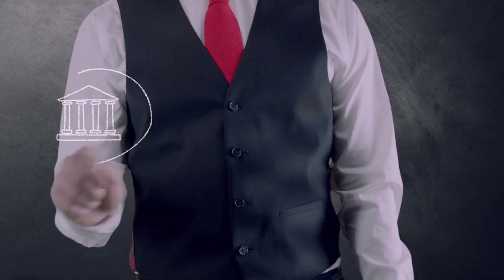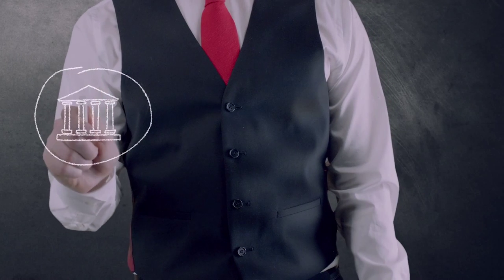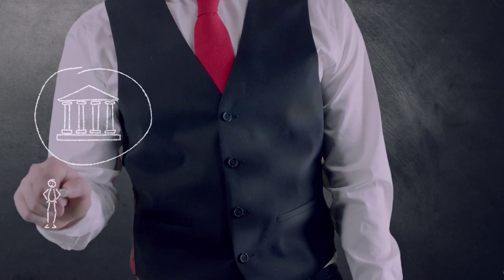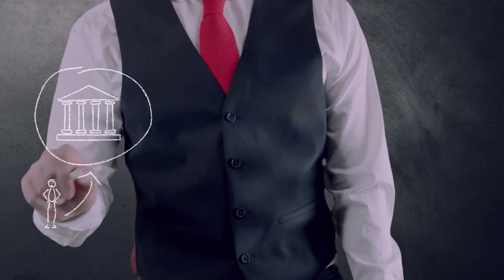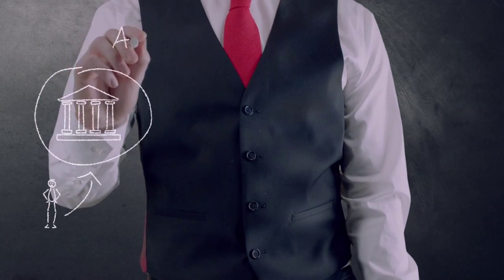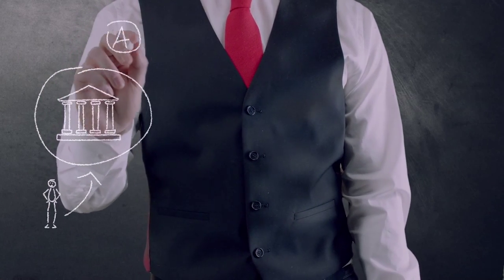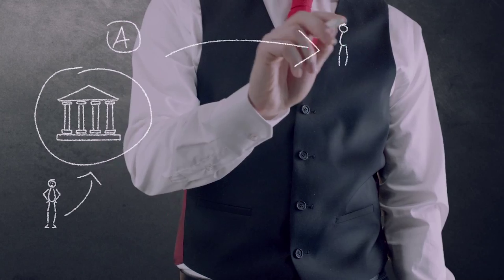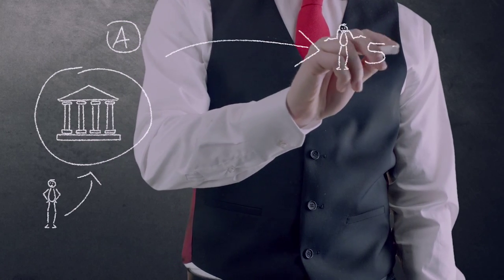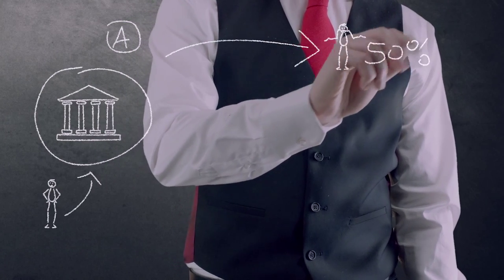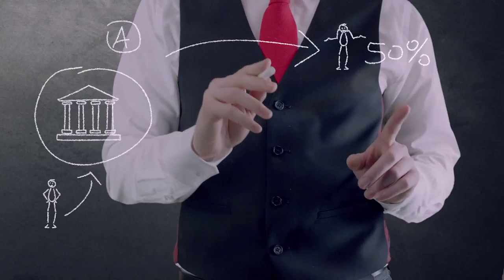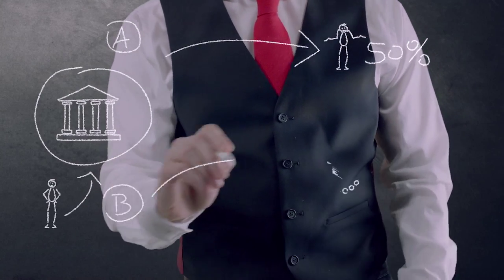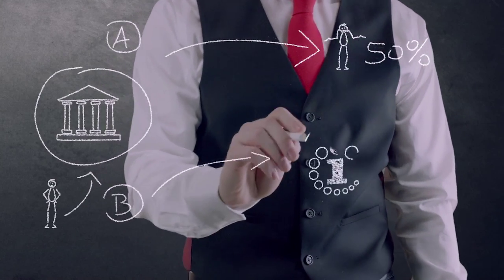Let's say you control a company and you need to decide whether to grant credit to a customer. How can you be certain that you will get your money back? You can take a chance — the odds of 50/50, it might work — or you can get information about the customer through Credit Info.